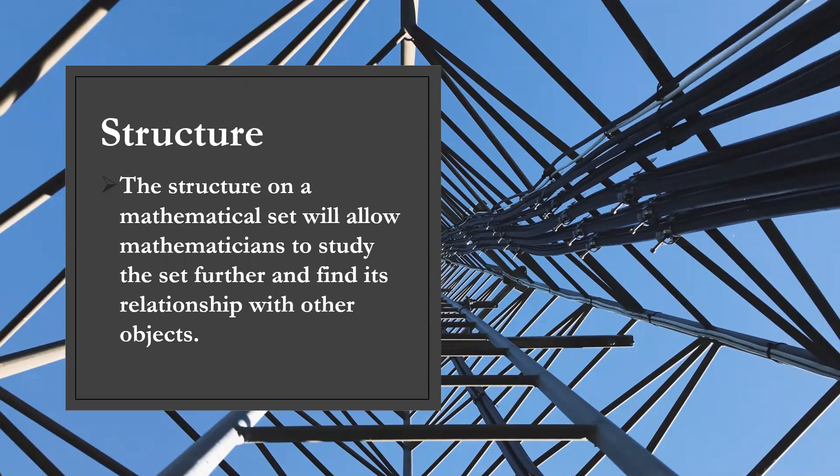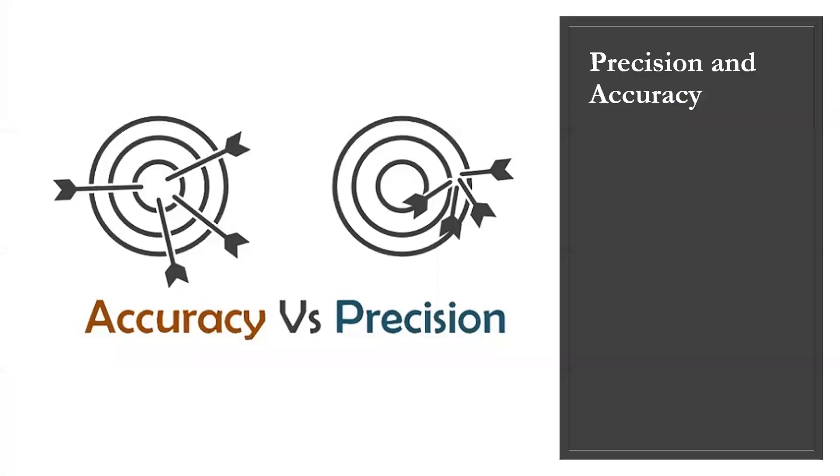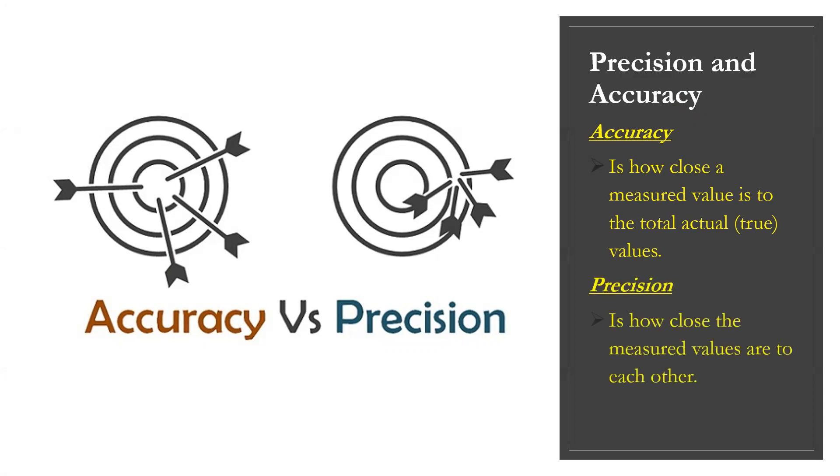before 3 times 2 becomes 6, it has a relationship with addition which is 3 plus 3 equals 6. Now, let's talk about precision and accuracy. What is the difference between precision and accuracy? When we say accuracy, it is how close a measured value is to the actual value. When we say precision,